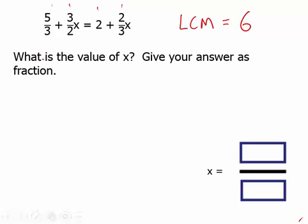So, 5 thirds times 6, the 3's cancel and we're just left with 5 times 2 or 10. 3 halves of 6, the 2's cancel, we're left with 3 times 3 which is 9.